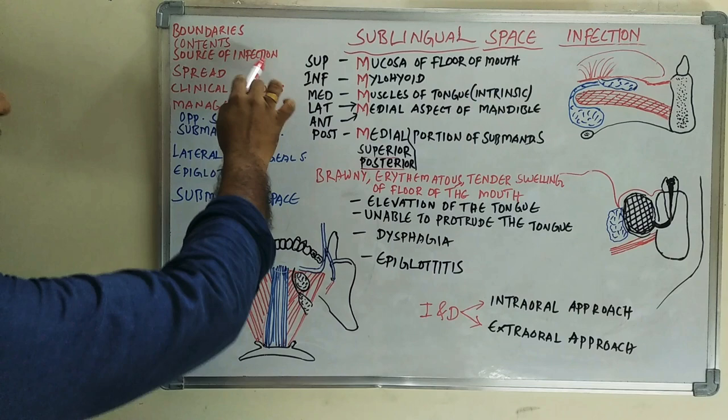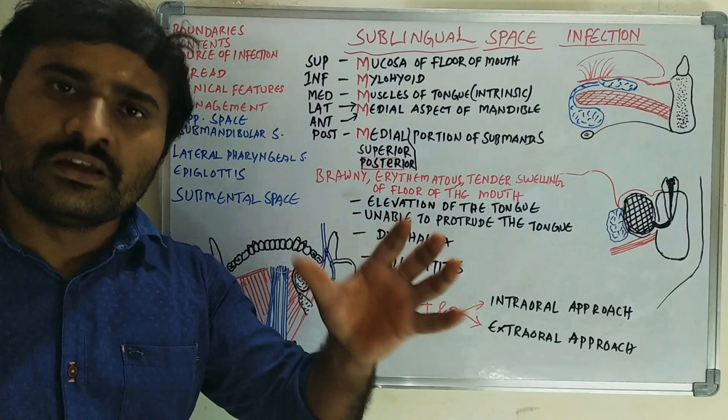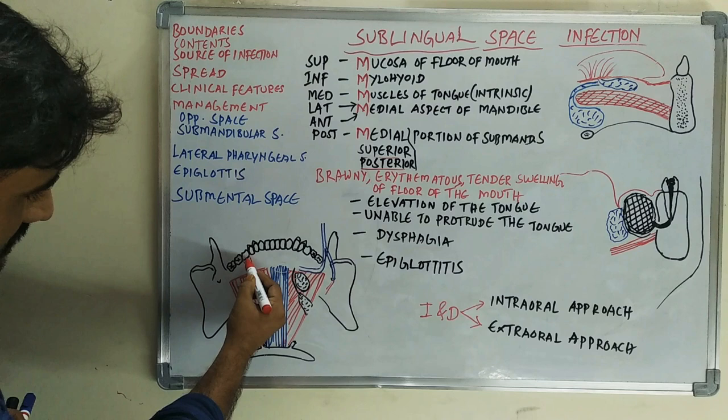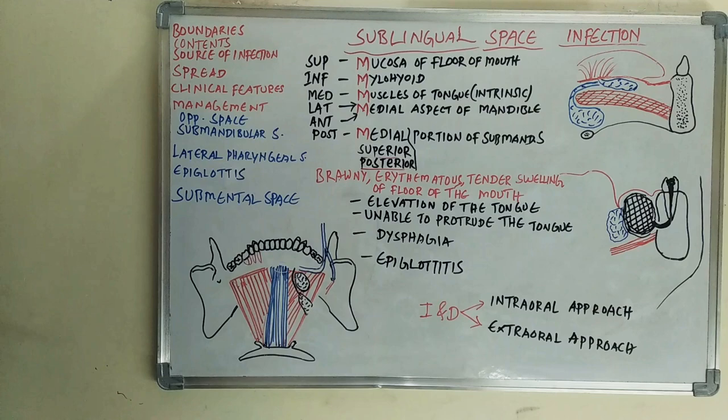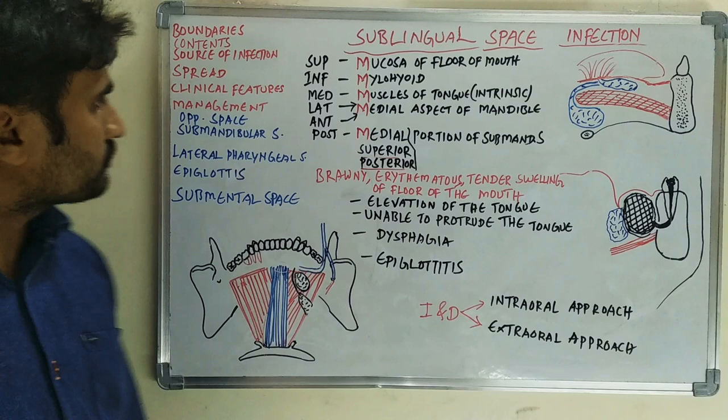The primary source of infection is the mandibular premolars and mandibular first molar. The root apices of these teeth are located above the mylohyoid muscle attachment. As seen in the diagram, the mandibular first molar, mandibular second premolar, and mandibular first premolar all have root apices above the mylohyoid muscle insertion, which leads to sublingual space infection.